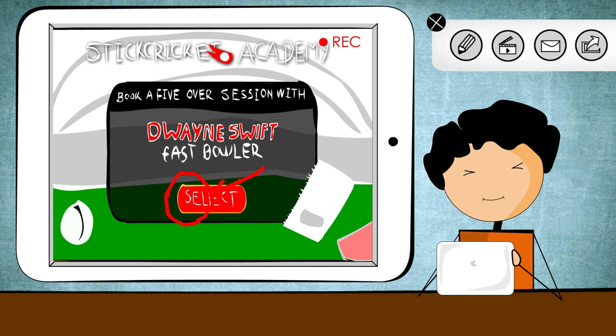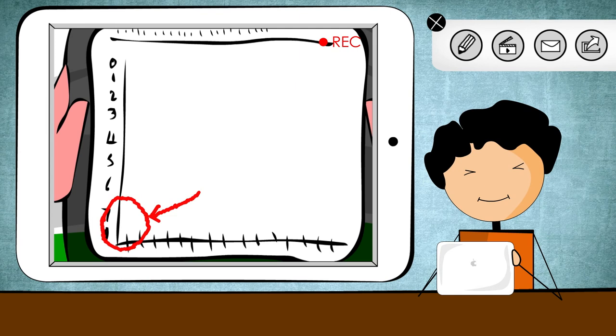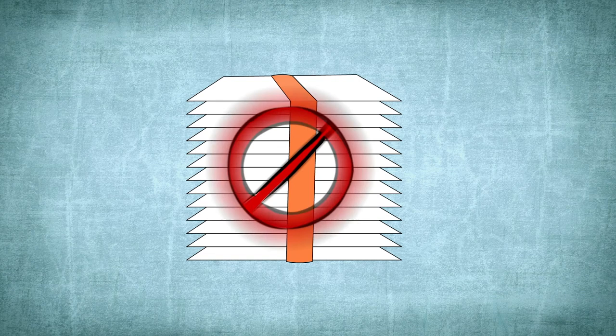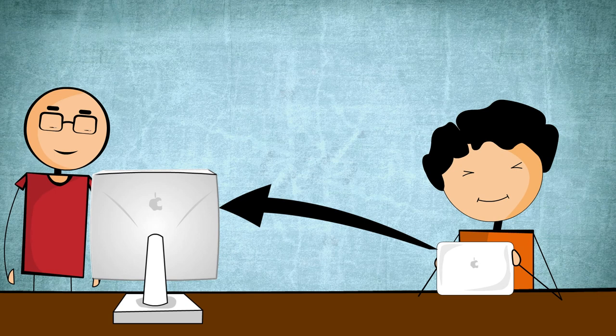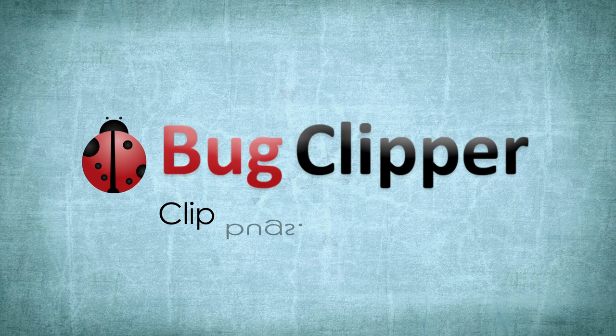No more hassling with files or endless email. Just capture the bug and it automatically sends everything to your developer, your file server, or your bug tracker. Bug Clipper clips bugs. Work faster. Check it out today at bugclipper.com.